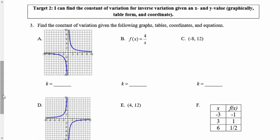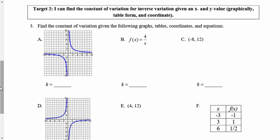All right, target two was finding the constant of variation for inverse variation. Given x and y values, we're going to do this given a graph or an equation or a point or a table, we can do it really given anything. So the first one, we're given a graph, and my first step is just going to be to just grab a point from that graph, any point. I'm going to grab that point 2, 2. It's the easiest for me to see.